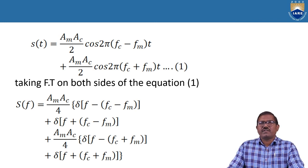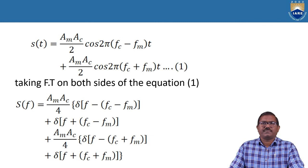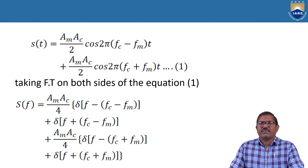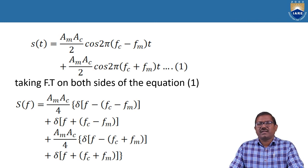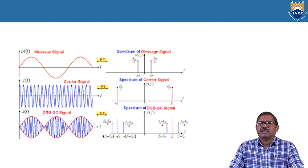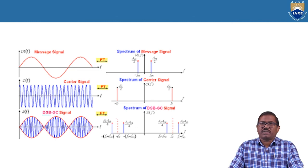Converting to the frequency domain by applying the Fourier transform on both sides, we get S(F) = (AMAC/4)[δ(F-FC-FM) + δ(F+FC-FM) + δ(F-FC+FM) + δ(F+FC+FM)]. Here FC-FM is the lower sideband and FC+FM is the upper sideband. This completes the time domain and frequency domain description of DSBSC. Thank you friends.